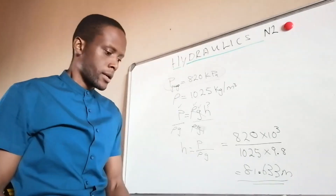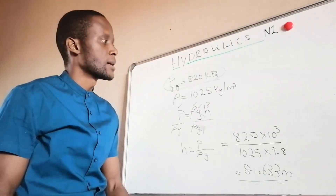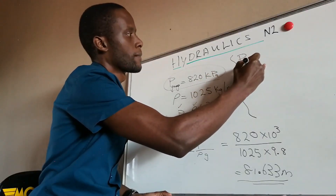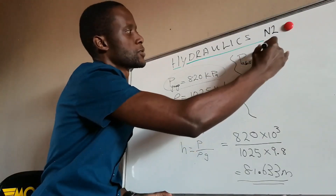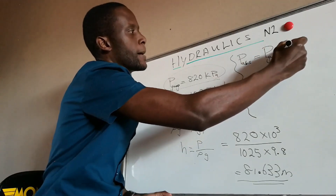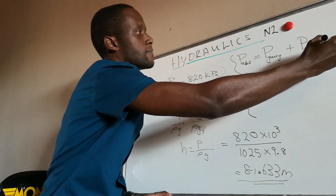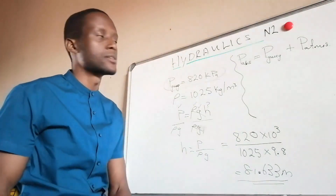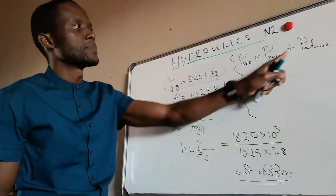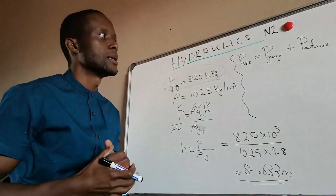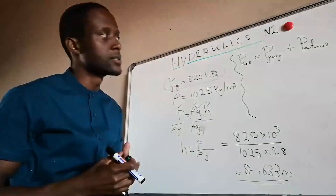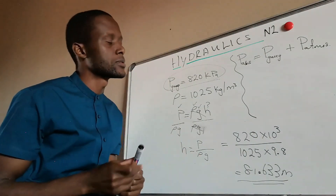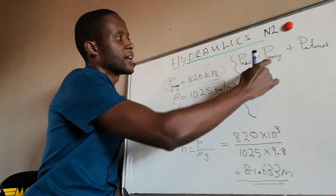For the next part, it says calculate the absolute pressure. Absolute pressure equals gauge pressure plus atmospheric pressure. As we discussed in our earlier video, gauge pressure plus atmospheric pressure gives us absolute pressure. Check the link in the description for that video.